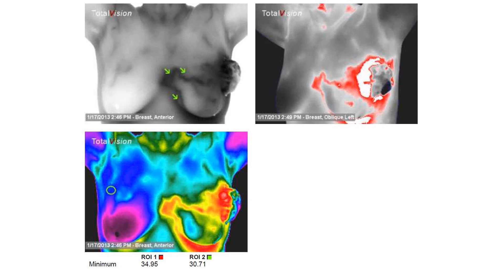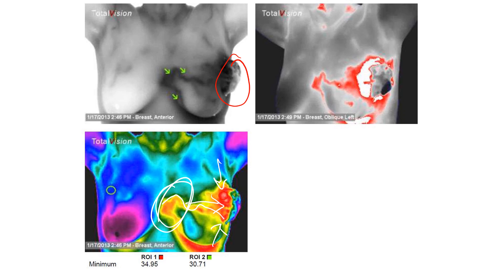Only about six months later, you can see the difference in how fast this tumor grew, and you can see the thermal impression as well. Note that you have the leading edge of the tumor that's become necrotic, with the leading edge that is hot. The hot margin right here — I'll show it to you in white — and then how it's come all the way into the mediastinum and that area.